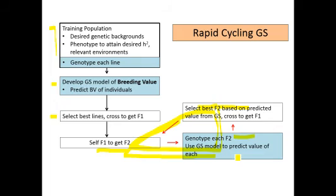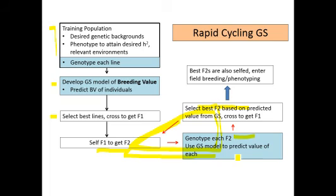As quickly as you can go through two generations — F1 to grow F2s, then F2s to cross and get F1s — you can complete a cycle of genomic selection. For winter wheat, two generations would take one year in the greenhouse; other crops might take much less time. In my case with wheat, we also take the best F2s and self them, and those selfed families go out into our field breeding program to be phenotyped.